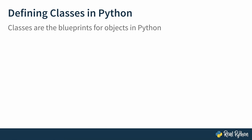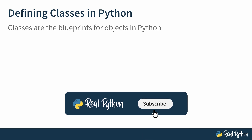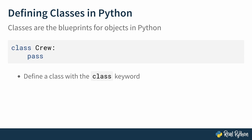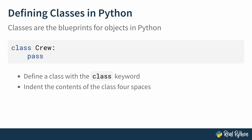So far you've learned that classes are the blueprints for objects. But how do you define a class in Python? In Python, it's convention to use title case for class names, so the C in Crew should be capitalized. Be sure to indent the contents of the class four spaces. In this example, you would use the pass statement as a placeholder for the actual contents of the class to avoid an error.